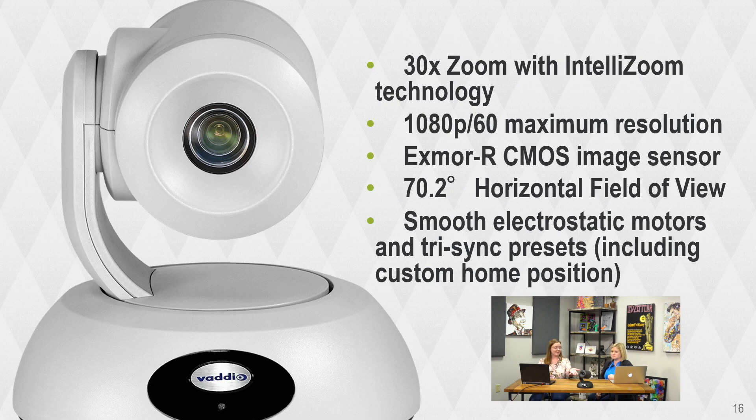Let's talk about the physical stats of the camera. It is a 30 times zoom — like our other Elites with the 30 times, it is a 20 times optical, and then the rest of the 30 gets you there with IntelliZoom. It is a 1080p 60 maximum resolution camera with a beautiful Exmor R CMOS sensor, which we are filming on right now. The horizontal field of view when zoomed all the way out is 70.2 degrees — and that is left to right, not a diagonal measurement, so you can compare apples to apples.